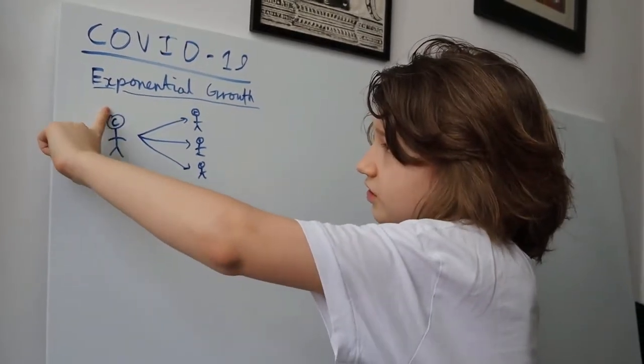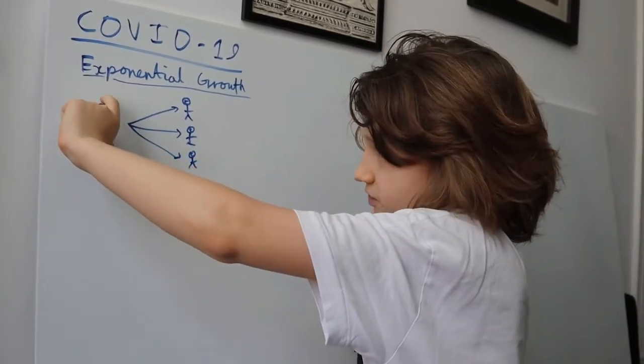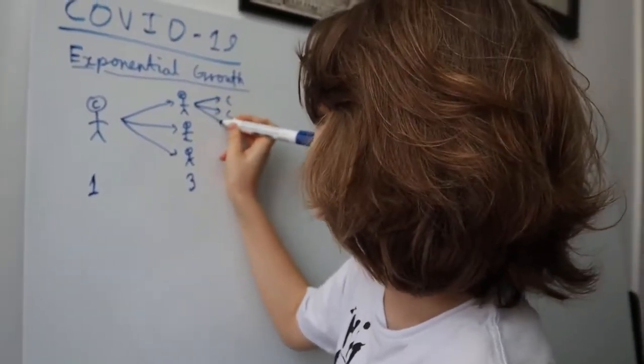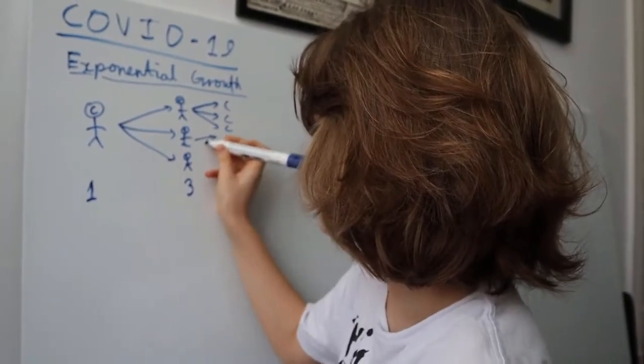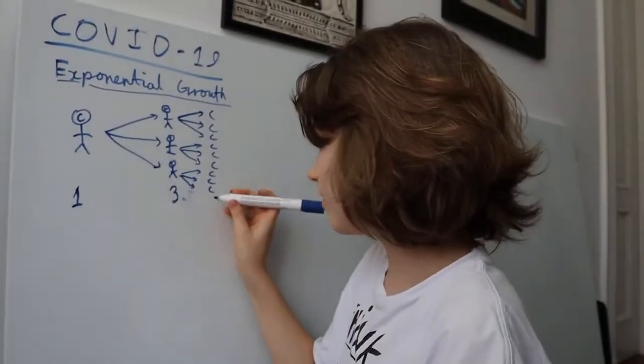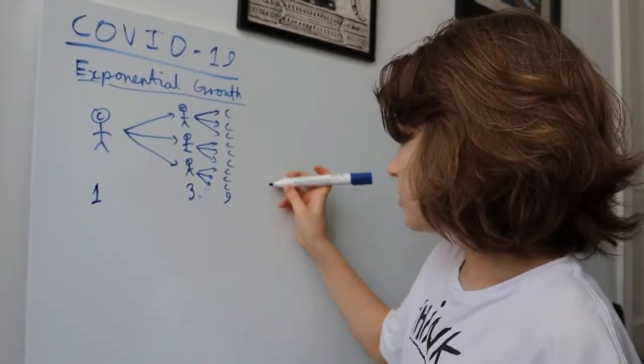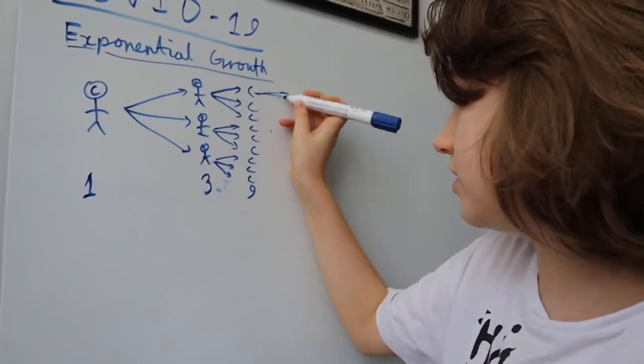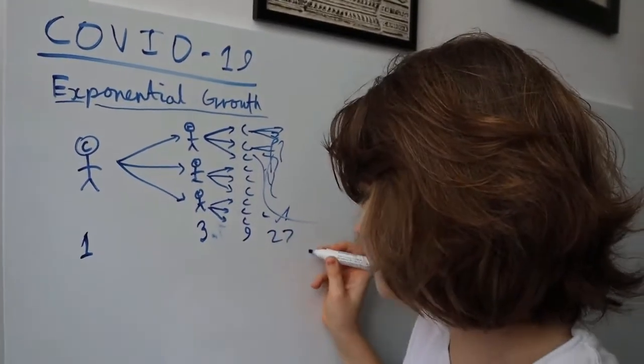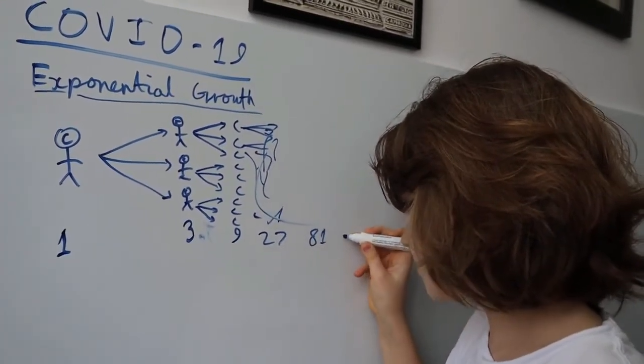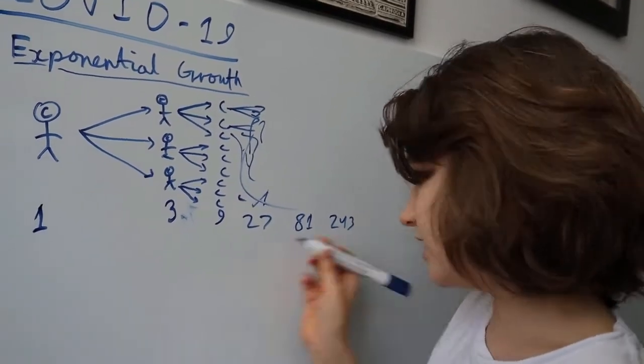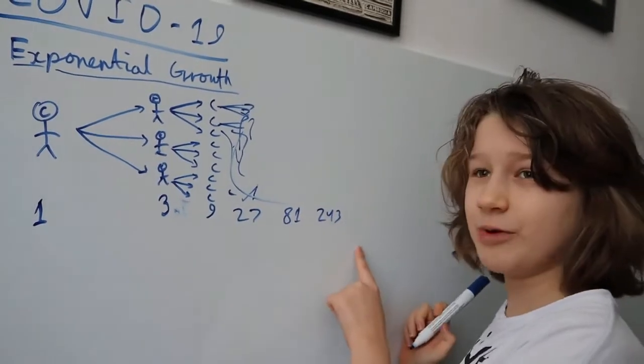In zero iterations, this person became infected. In the first iteration, these three people became infected. Every single one of those people in the next iteration can transmit the virus as well to three other people, which makes for a total of nine people getting infected in the second iteration. Each of these can spread the virus to three other people, and you get 27 in the third iteration, 81 in the fourth iteration. You can see this grows pretty quickly. 243 in the fifth iteration. It multiplies by three each time.